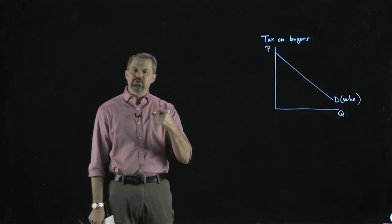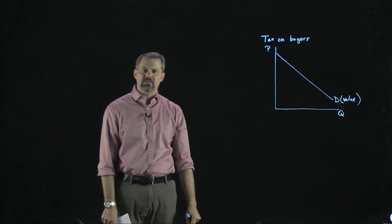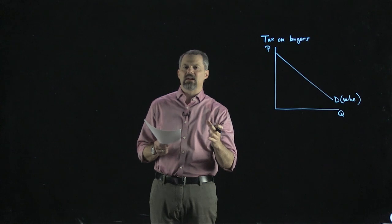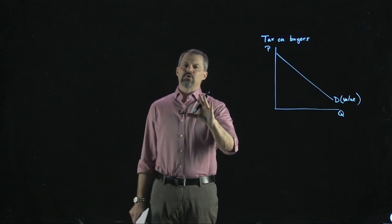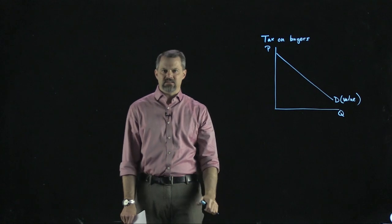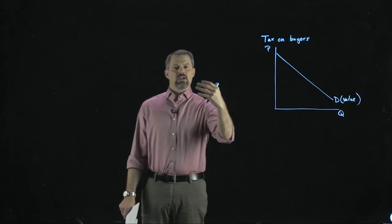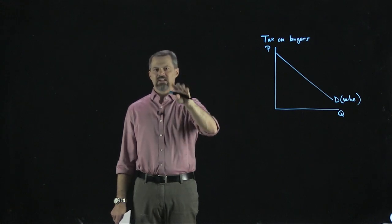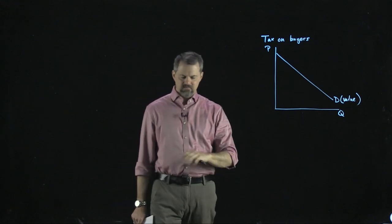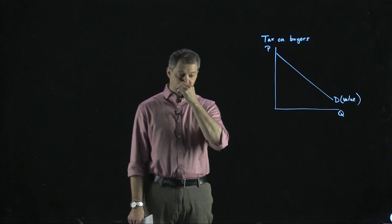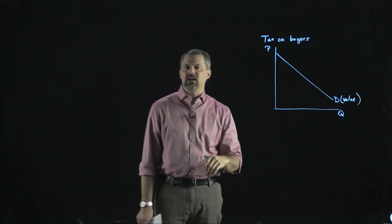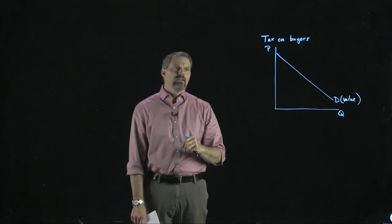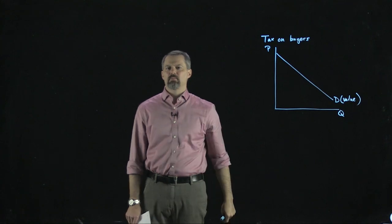A tax on buyers reduces the value they place on the good. For example, suppose you're willing to pay $10 for a pizza. If the pizza place says the price is $7, you buy it and get $3 of consumer surplus. $10 is the maximum you're willing to pay.